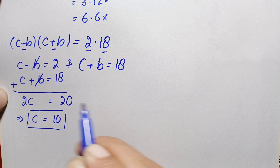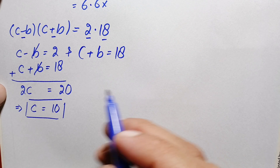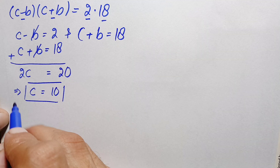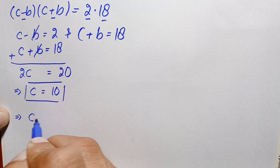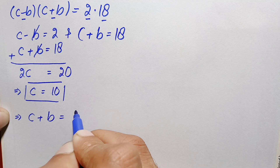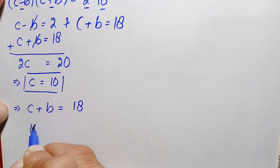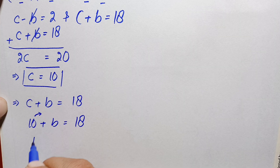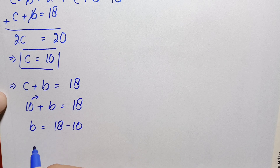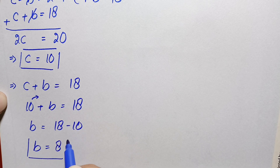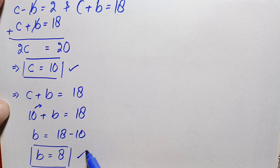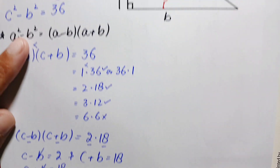Now we find the value of b by substituting c = 10 into the equation c + b = 18. This gives 10 + b = 18. Taking 10 to the right hand side: b = 18 − 10 = 8. So the value of b is 8. We now have all three sides: a = 6, b = 8, and c = 10.